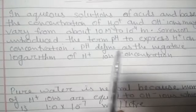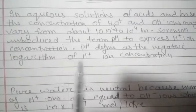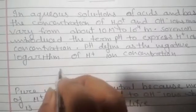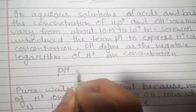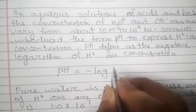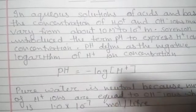The pH is defined as the negative logarithm of H plus ion concentration. pH equals minus log H plus ion.